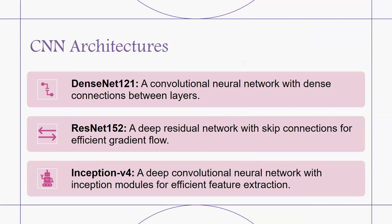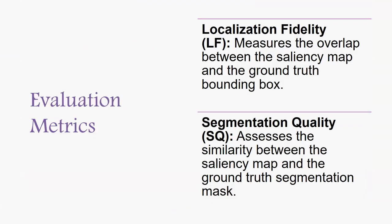The CNN architectures used, as mentioned earlier, are DenseNet-121, ResNet-152, and Inception version 4. The evaluation metrics used were localization fidelity, which quantifies the degree to which the saliency map overlaps with the bounding box of pathology in the ground truth annotation, and segmentation quality, which measures the similarity between the saliency map and the ground truth segmentation mask, providing a more detailed representation of the pathology region.